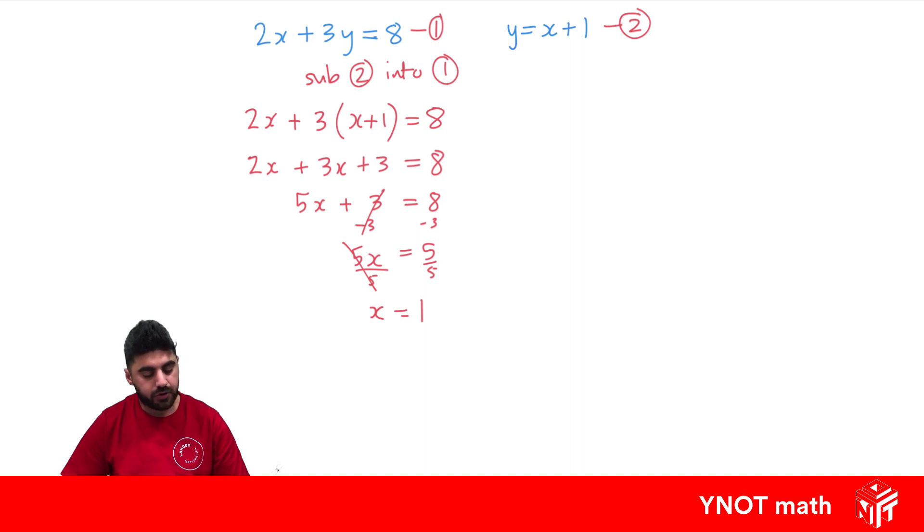That's not all because this only tells us what x is. We also want to solve for y. When we solve simultaneously we need to solve for both variables. So now we can go ahead and sub that value into the easier equation out of the 2. And this one looks like the easier one. So we're going to sub x equals 1 into equation 2.